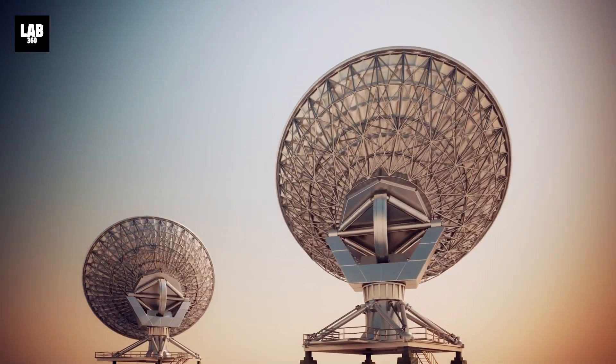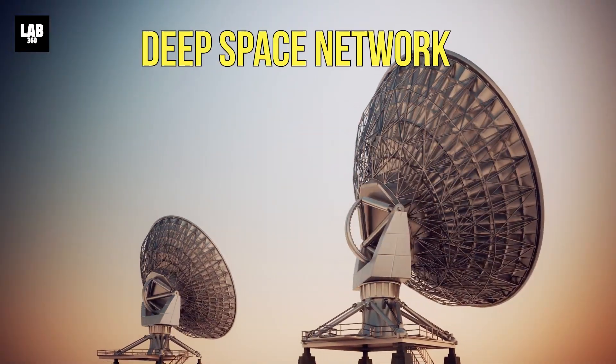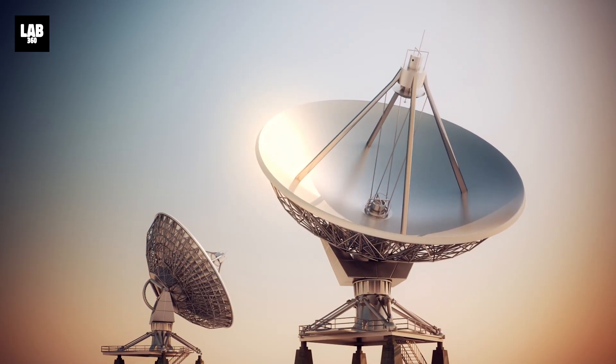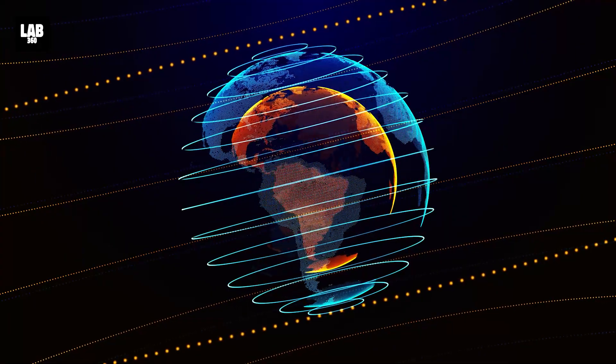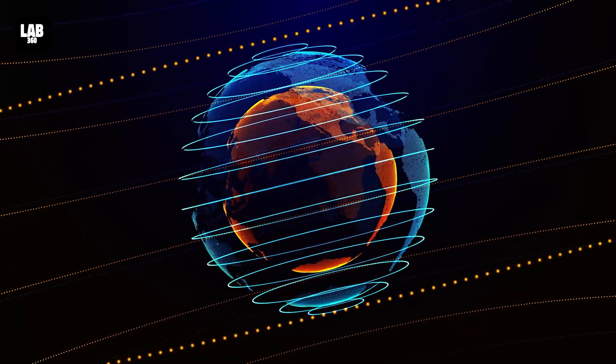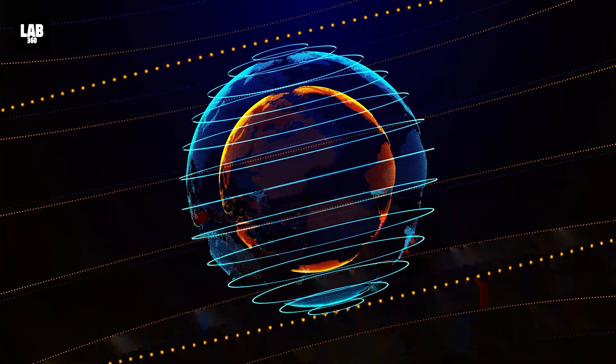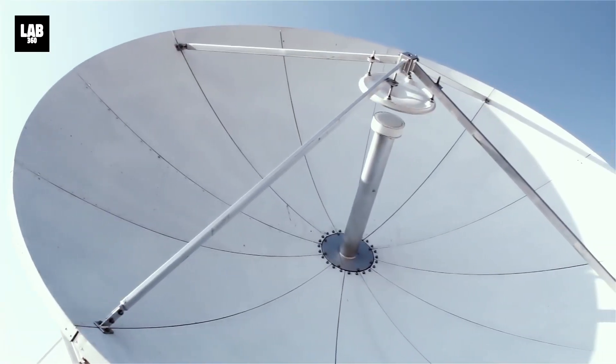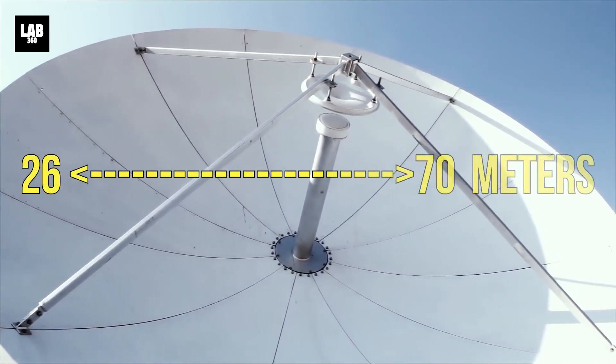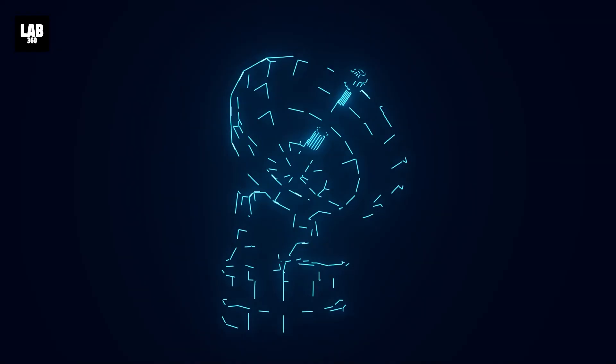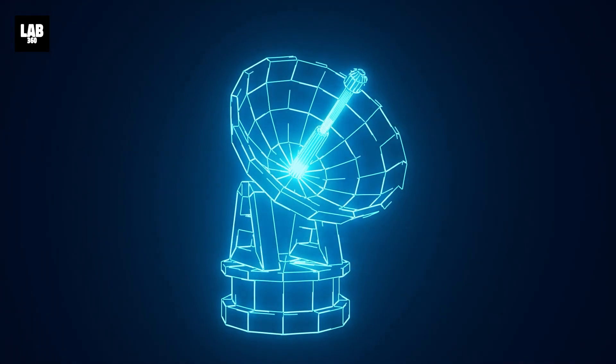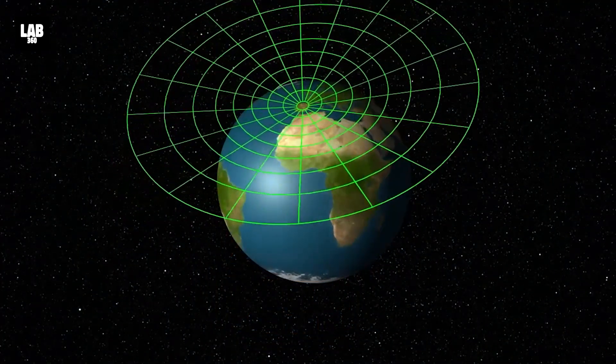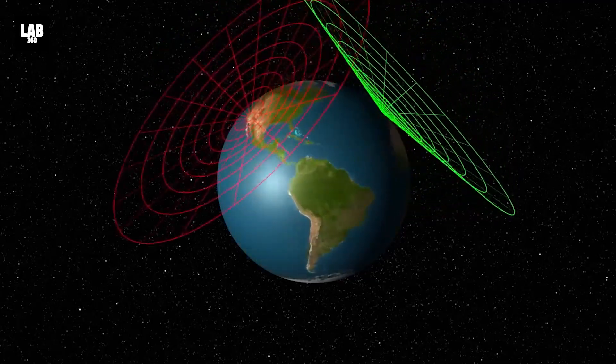Without another essential component, the Deep Space Network or DSN, these voyages would have remained only fantastical space fantasies. The DSN is a global network of enormous radio antennas that are positioned all over the world, notably in Australia, California, and Spain. These enormous dishes, which have diameters ranging from 26 to an incredible 70 meters, function as cosmic megaphones that let us speak with spacecraft orbiting other planets.